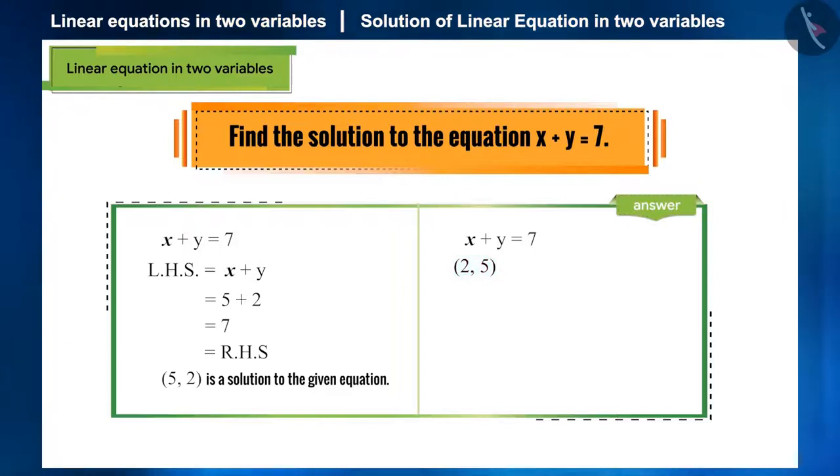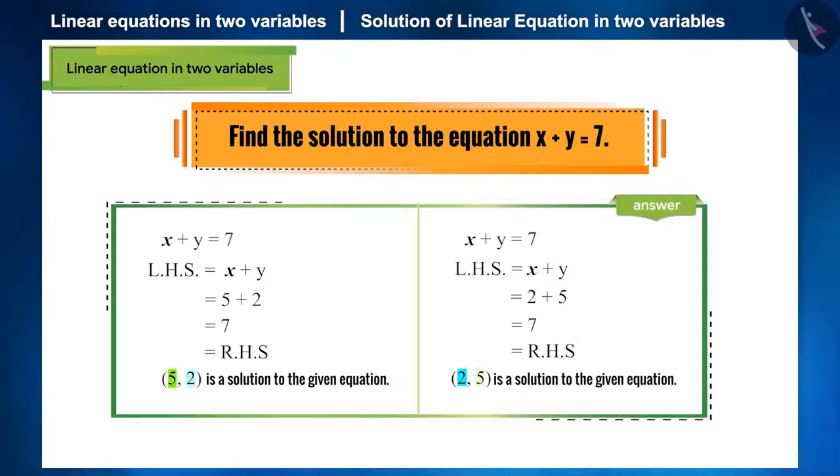So is (2, 5) also a solution to the given equation? 2 plus 5 is equal to 7, yes. (2, 5) is also a solution to this equation. So we saw that by exchanging the values of x and y in this equation,